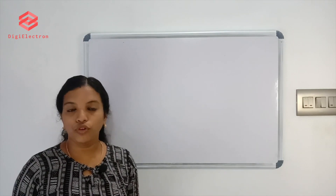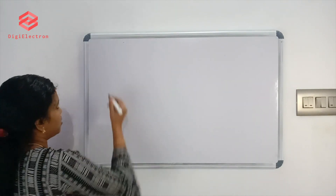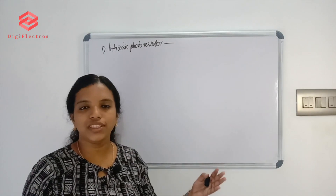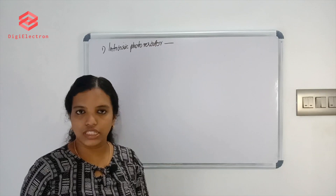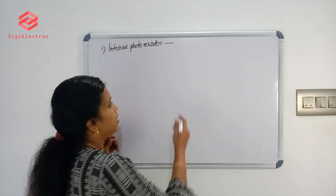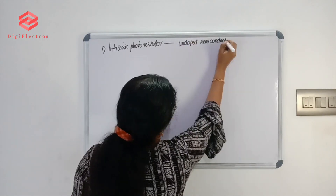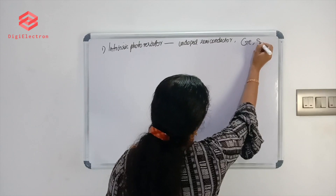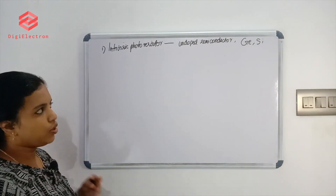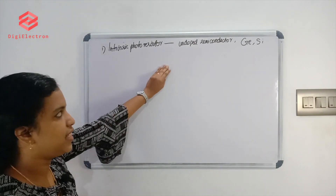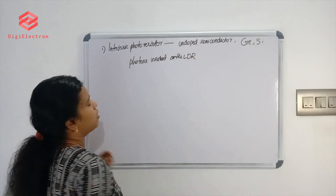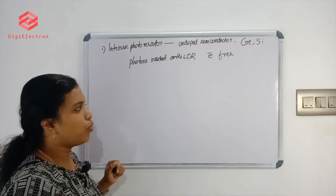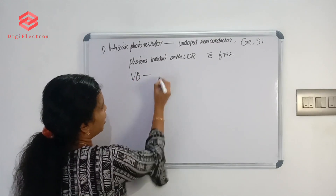Next, we look at the types of LDR. The first type is Intrinsic Photoresistor, which uses undoped semiconductor material. When photons are incident, electrons are freed from the valence band and flow into the conduction band.